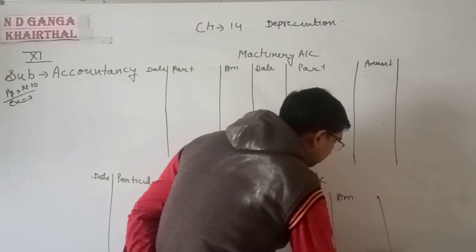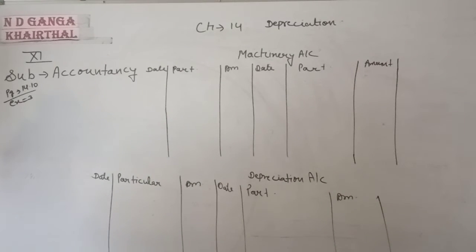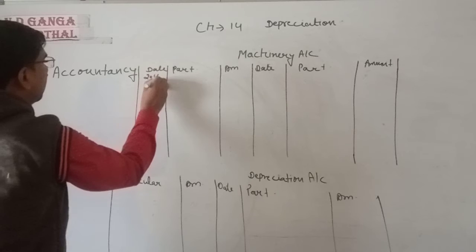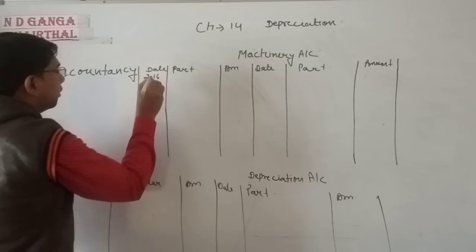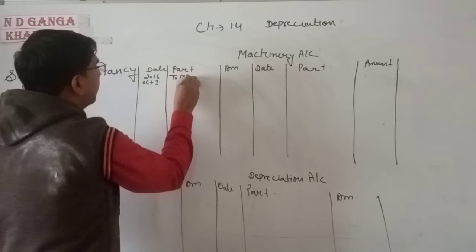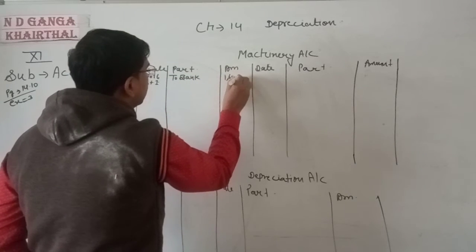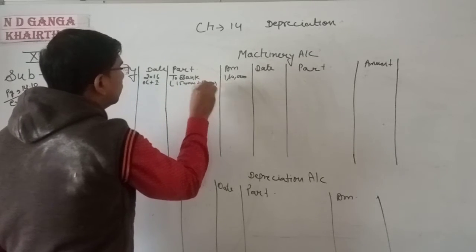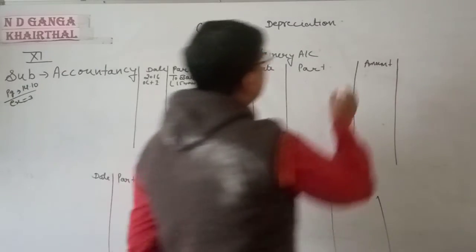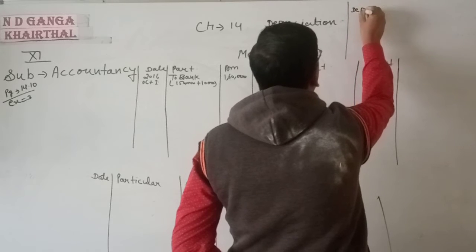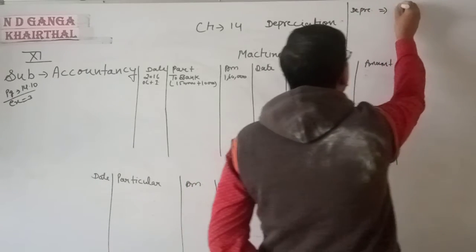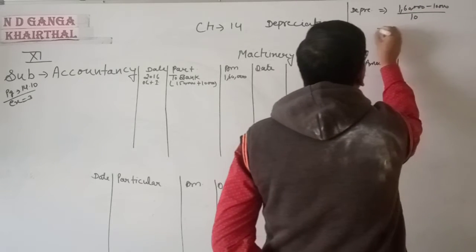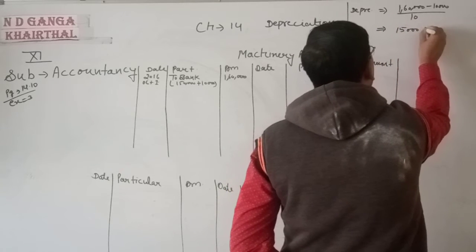Entry 1: On 1st October 2016, machinery account is debited to bank account for 1,60,000 rupees — that is 1,50,000 plus 10,000 installation cost. Depreciation equals (1,60,000 minus 10,000) divided by 10, which gives 15,000 rupees per year.